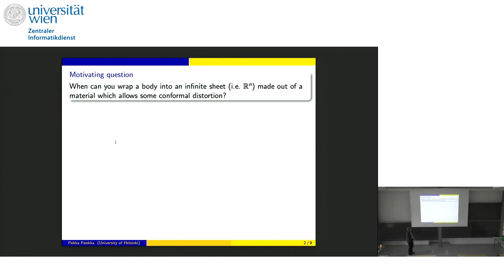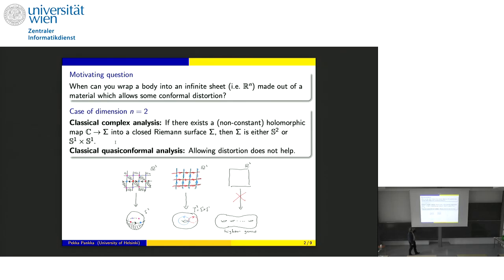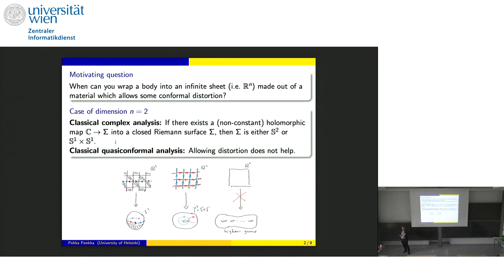This is actually a very classical thing. If you look at complex analysis, what kind of distortion am I allowing? I'm allowing change of scale, but not much change of angle. Looking at classical complex analysis, you look at holomorphic maps to Riemann surfaces. There is a classical result coming from uniformization saying that the target cannot be too complicated: if you are mapping from the entire plane to a closed Riemann surface, the surface must be a standard sphere or flat torus.